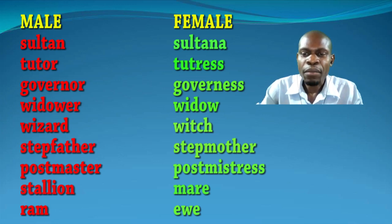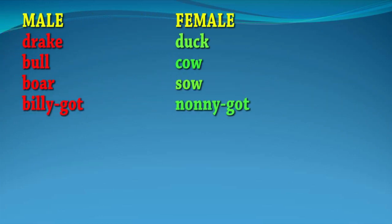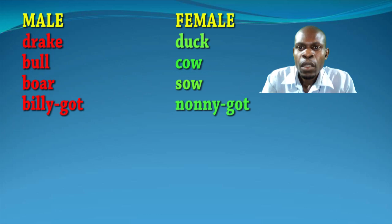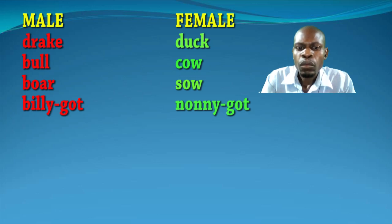Ram — ewe. Drake — duck. Bull — cow. Boar — sow. Billy goat — nanny goat.